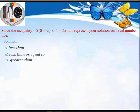The next type is greater than, which means the quantity to the left is more than the quantity to the right but they are not equal. If we want to include equality, we use greater than or equal to, meaning the quantity to the left is greater than or equal to the quantity on the right.